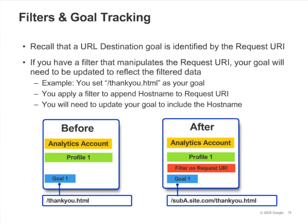If you are using a filter that manipulates the request URI, make sure that your URL destination goal is defined so that it reflects the changed request URI field. For example, in the slide, we have a profile that defines thankyou.html as a URL destination goal. But we have another profile with a filter that appends the host name to the request URI, so for that profile we need to change the goal definition accordingly.